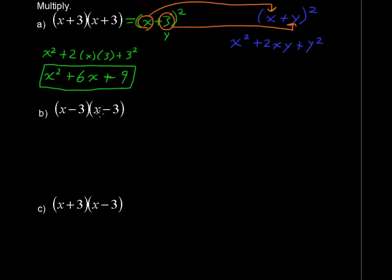On the second one you get x minus 3 times the quantity x minus 3, and that can be rewritten as x minus 3 quantity squared, so you recognize that as a special product, so you've got this x minus y quantity squared.